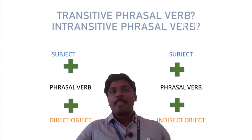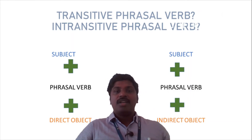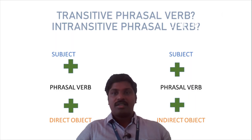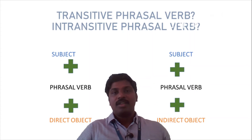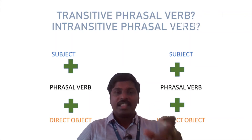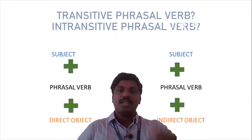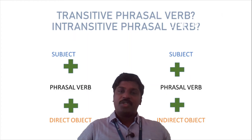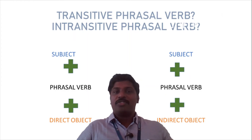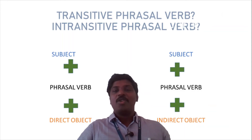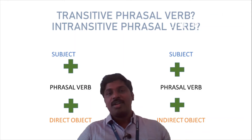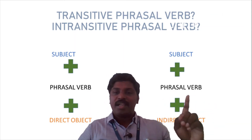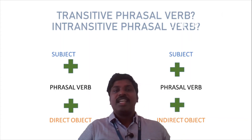The only difference is that a transitive phrasal verb is a phrasal verb which is dependent on an object. Remind yourself of this phrase: 'dependent on the object.' So a phrasal verb which is dependent on an object is called a transitive phrasal verb. The opposite is the intransitive phrasal verb, which is independent of the object. Transitive phrasal verb means dependent on object; intransitive phrasal verb means independent of object.